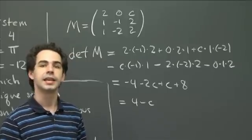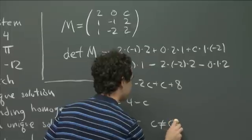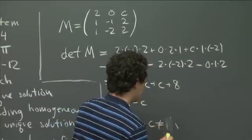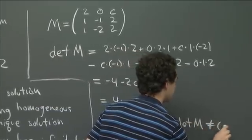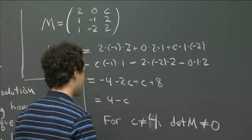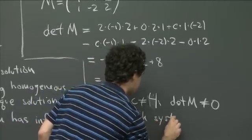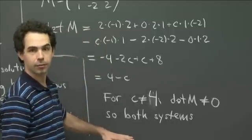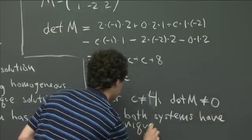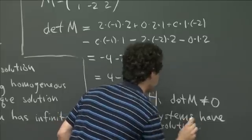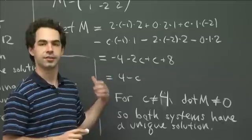We want the determinant to be non-zero. So for c not equal to 4, the determinant of M is not 0, and both the original system and the corresponding homogeneous system have a unique solution.